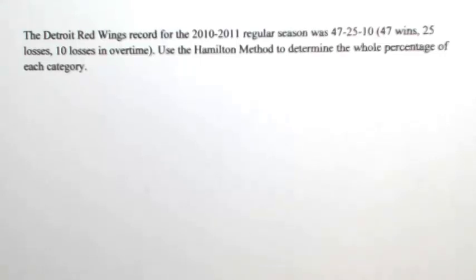The Detroit Red Wings record for the 2010 to 2011 regular season was 47, 25, and 10. So 47 wins, 25 losses, and 10 losses in overtime.